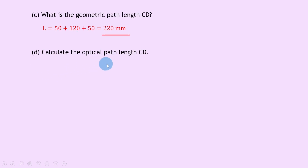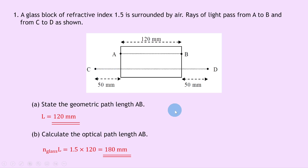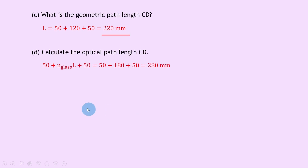Lastly, part D says to calculate the optical path length CD. Just like in part B, optical path length equals refractive index times geometric path length at each segment. We have N_air × 50mm + N_glass × 120mm + N_air × 50mm, which equals 50 + 180 + 50 = 280 millimeters.